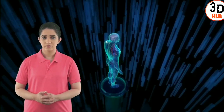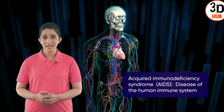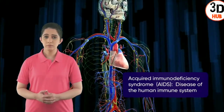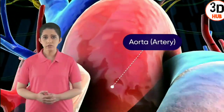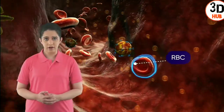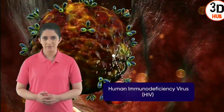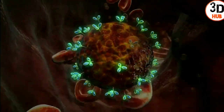The number is increasing by leaps and bounds. Though it is a high-risk disease, it can be prevented if greater awareness is provided. Acquired immunodeficiency syndrome, or AIDS, is a disease of the human immune system. A closer look inside an artery shows numerous red blood cells and the human immunodeficiency virus, HIV.